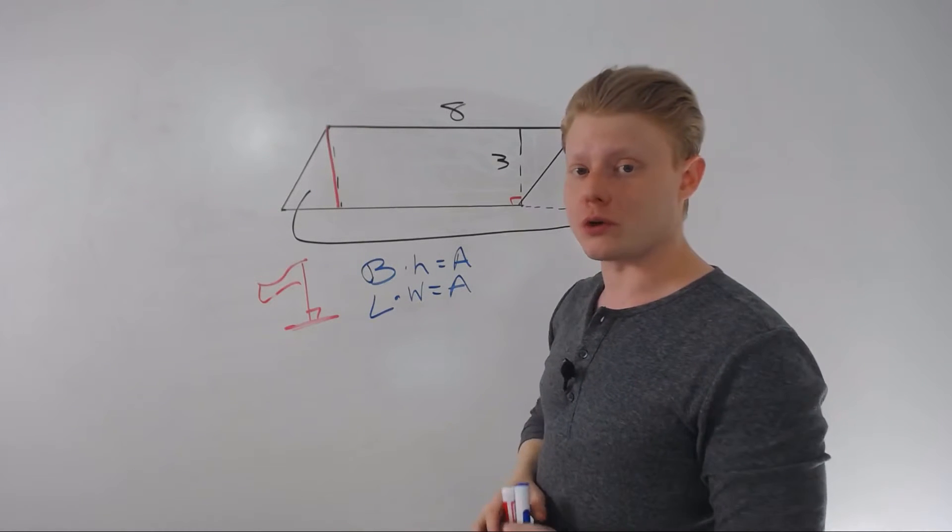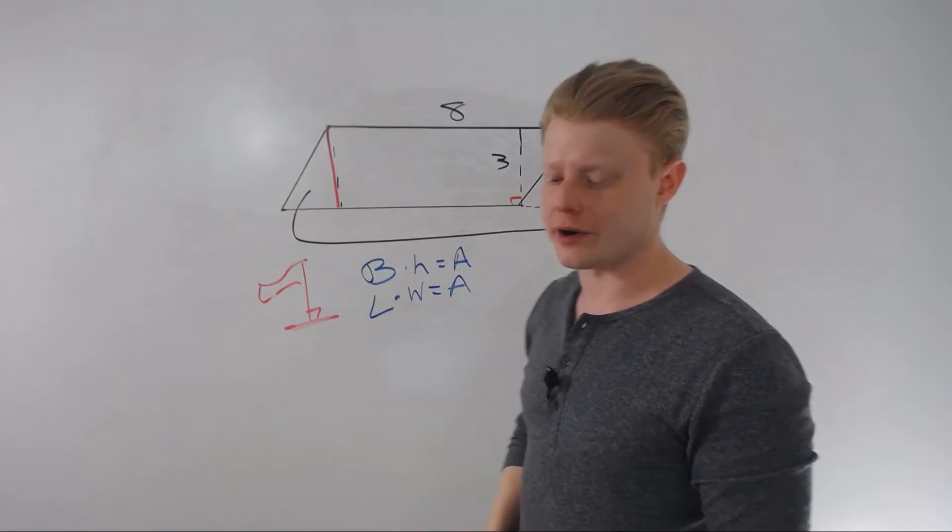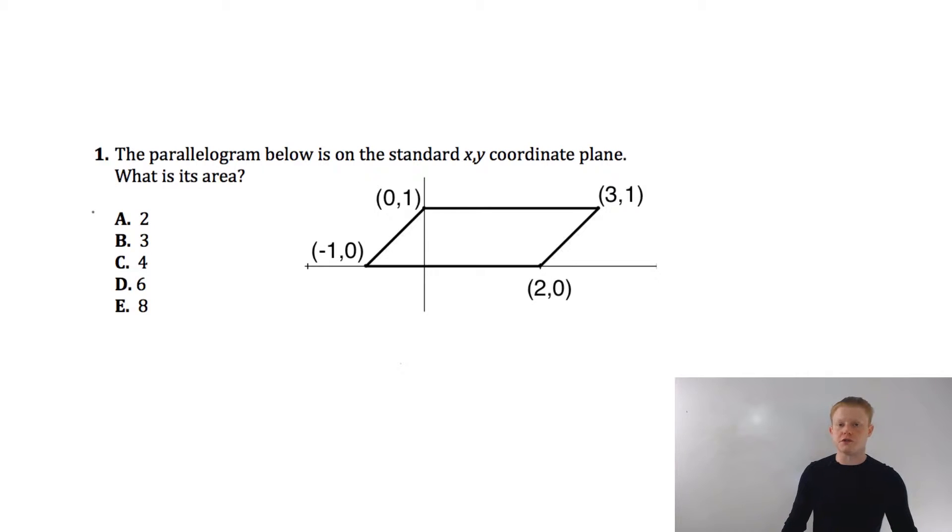Let's go ahead and jump into our full screen ACT example. You'll kind of get a better idea. Okay, this is a pretty standard parallelogram question. We're given a parallelogram on a standard coordinate plane. They're asking for the area.